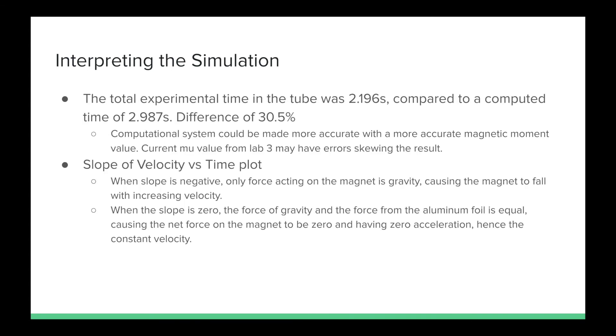The experimental time in the tube was 2.196 seconds, while the Glow script computed time was around 2.987 seconds. This is a difference around 30%. The computational system could be made more accurate with a more accurate magnetic moment value, as the current value from lab 3 may be slightly off, which could skew the result.